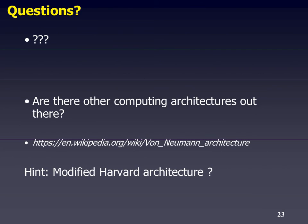One thing I'd like you to look up if you have a chance: look up Wikipedia, look up von Neumann, and see if there are other computing architectures out there. I'll give you a big hint: Modified Harvard architectures. Quantum computing is also out there. There are even biological computing architectures — using DNA, for example. Good things to look at.